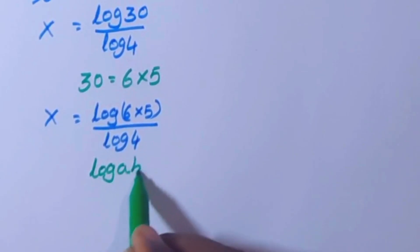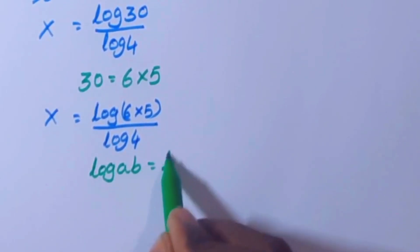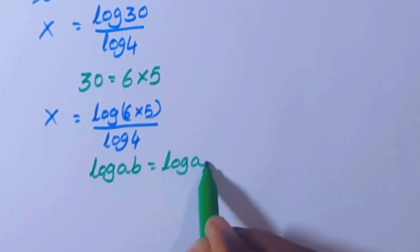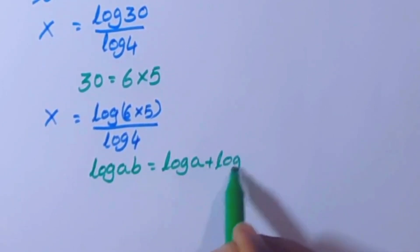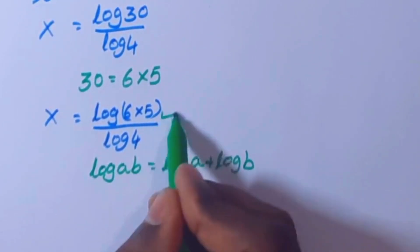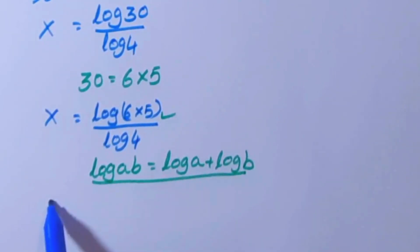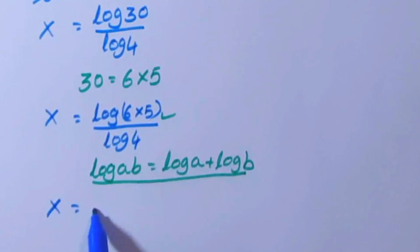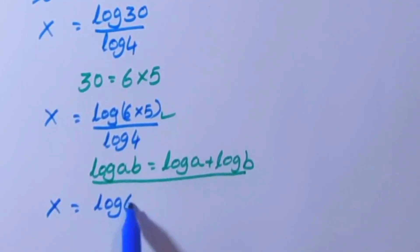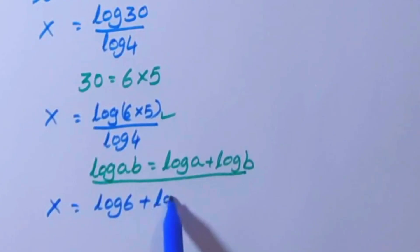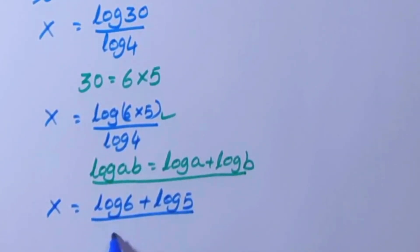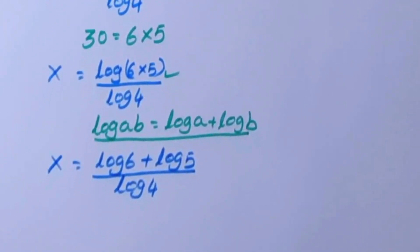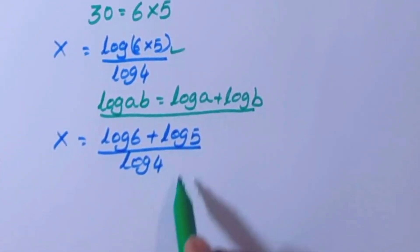Now we apply the log product formula: log(ab) equals log a plus log b. This expression is in that form, so x equals (log 6 plus log 5) divided by log 4.